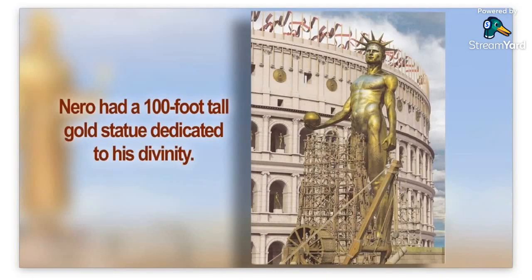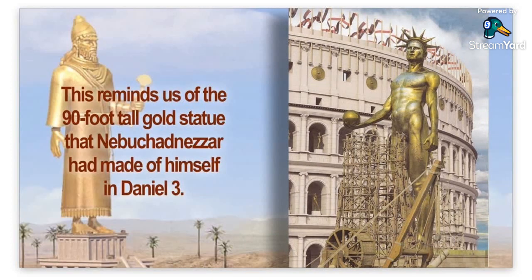There are a couple of other interesting things from history. If we read the Roman historians, we find that Nero had a 100-foot-tall gold statue dedicated to his divinity. And in Daniel 3, there was a 90-foot-tall gold statue that Nebuchadnezzar made of himself. This isn't directly in the parallel text, but it's interesting that Nebuchadnezzar and Nero both had these giant gold statues built of themselves — both almost the same height as the Statue of Liberty, and both gold according to history and the Bible.